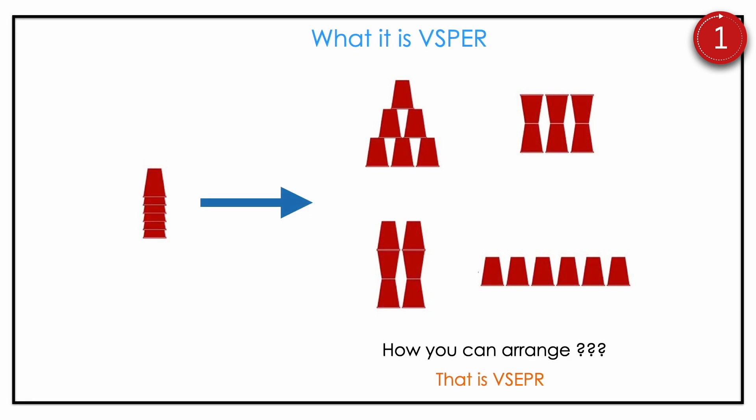So what does VSEPR theory mean? It's simple. You have 6 cups — how will you arrange them? Will you arrange them in a linear way, stacking, stacking in inverse way, or stacking in opposite ways? How you can arrange the atoms within the structure is VSEPR. Basically, you should know how you arrange the atoms within the structure — that is VSEPR. You are going to predict the shape and geometry of molecules.